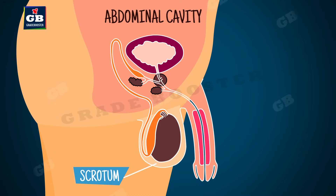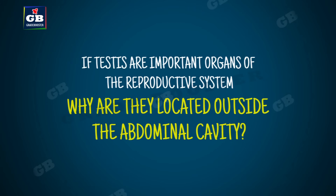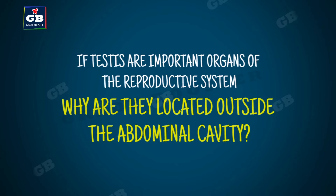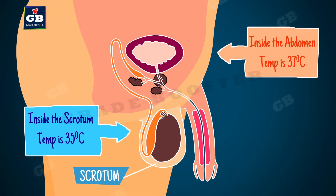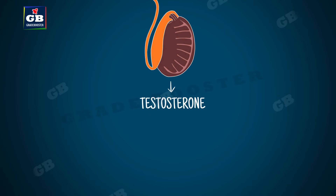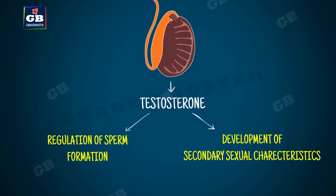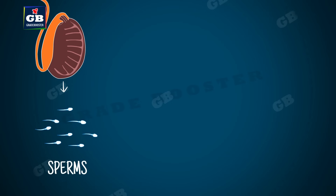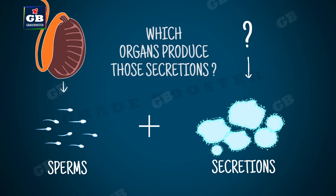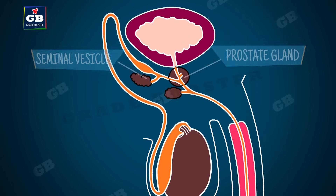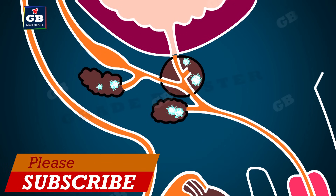The testes are present outside the abdominal cavity in a sac-like structure called the scrotum. They are located outside because sperm formation requires a lower temperature than the normal body temperature. Testes also produce a hormone called testosterone, which regulates the formation of sperms and is responsible for the development of secondary sexual characteristics during puberty. Sperms need fluid secretions — produced by the prostate gland and seminal vesicles — which provide nutrients to the sperm cells.